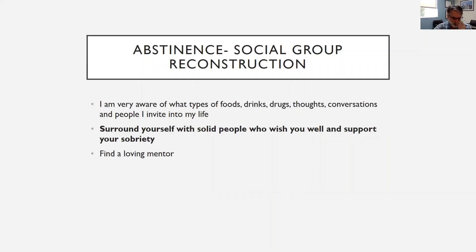Social group reconstruction is also important for abstinence. You have to become aware of what types of foods, drinks, drugs, thoughts, conversations, and people you invite into your life. Ideally you want to surround yourself with solid people who wish you well and support your sobriety, and find a loving mentor. I often talk with patients about their social group — you may have to remove numbers from your phone of people who use substances that are triggers, or even get a new phone. They've got to really change their social group.